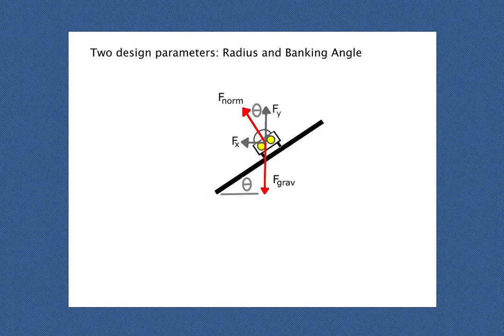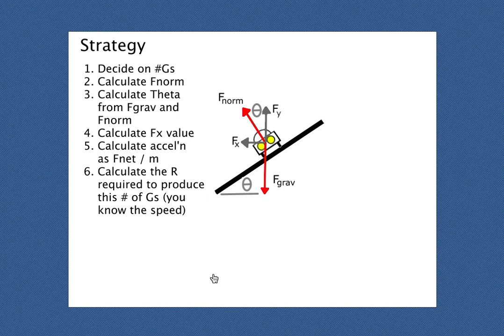And here's how I suggest you calculate it. First of all, decide on the number of g's you want your riders to experience. Now there's a safety parameter here. The number of g's for a banked turn can be no more than three g's. So once you decide what sort of ride or experience you want the riders to have, you have determined the number of g's.